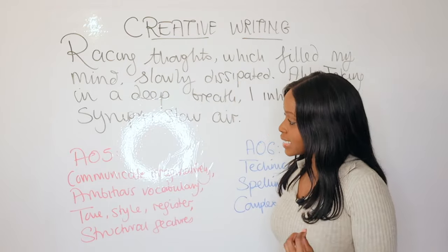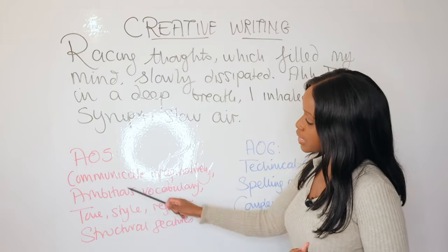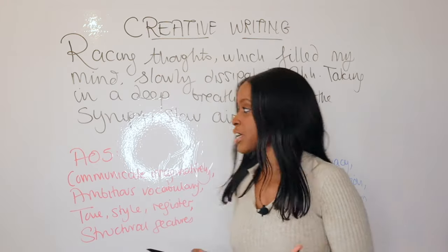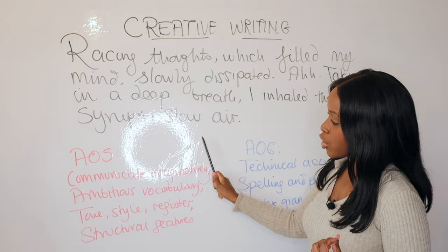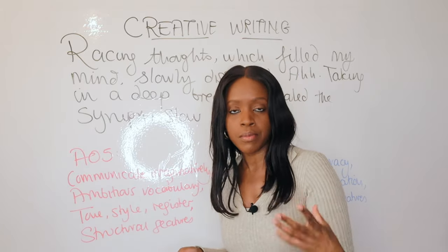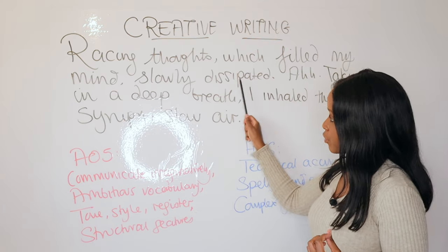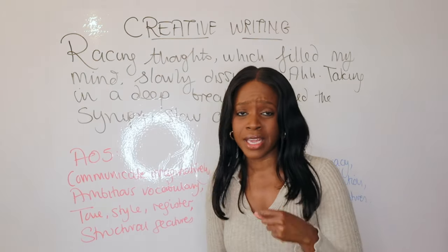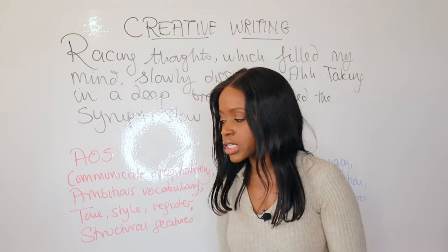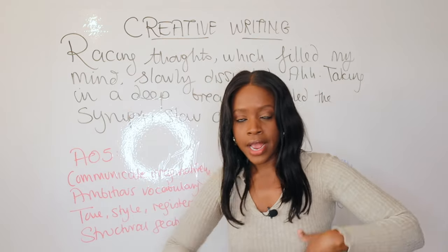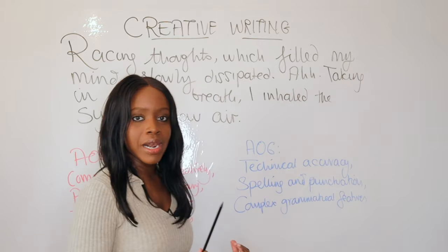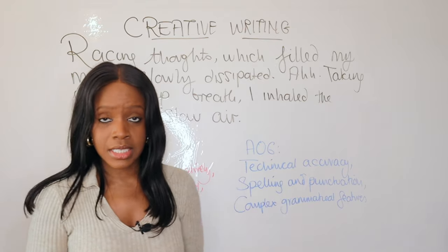Now let's go over why this sentence is really powerful and fits what examiners are looking for. For AO5, you need to communicate imaginatively — this phrase definitely does that. Even describing the air as 'syrupy slow' uses lots of metaphors and imaginative writing to finish off the story and keep the reader intrigued. AO5 also requires ambitious vocabulary, such as 'dissipated' and 'syrupy slow air.' In terms of tone, style and register, I'm using a formal register and setting a slowing tone so the reader can relax. Structurally, I use a mix of longer complex sentences alongside one-word minor sentences.